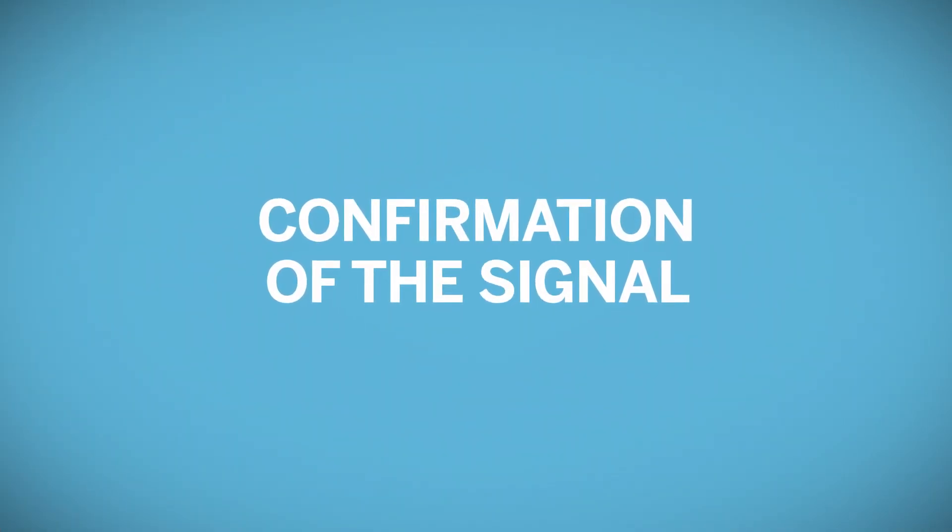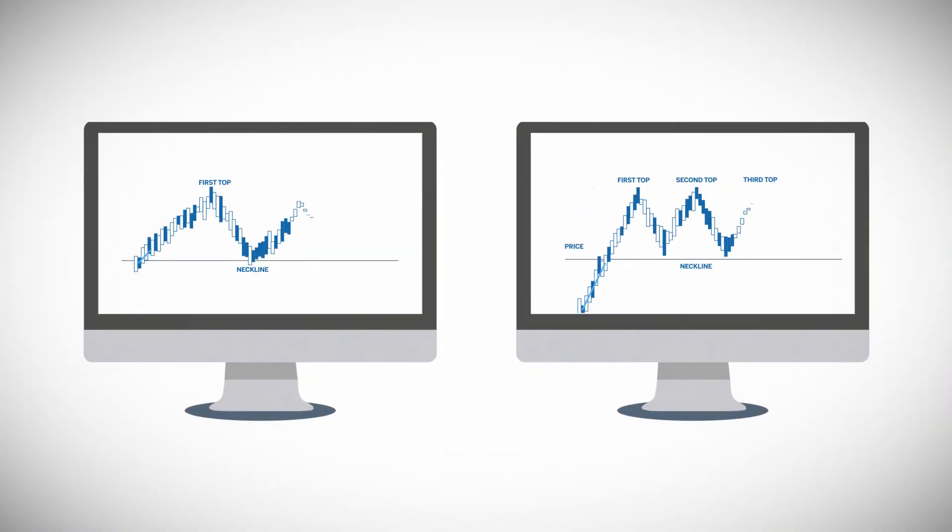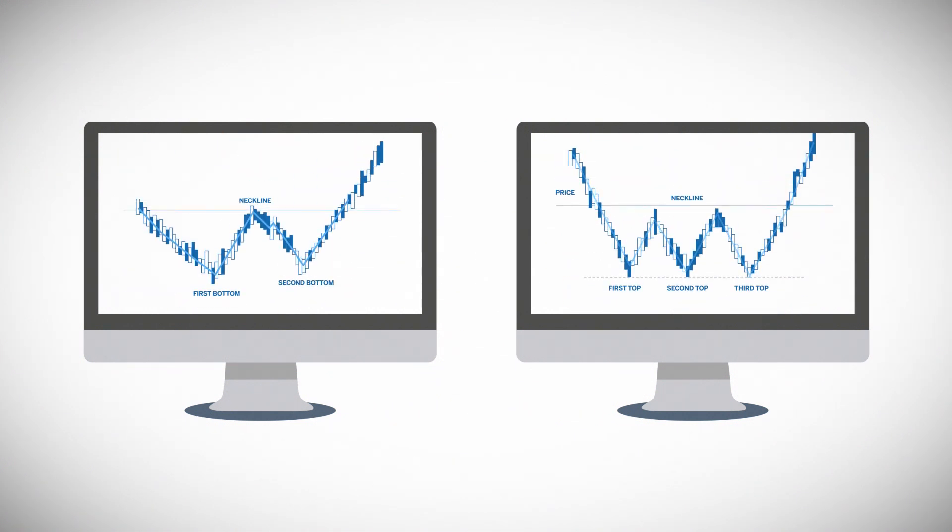Like any technical analysis pattern, confirmation is needed on the signal. Typically, on double and triple tops, the confirmation signal is breaking below the low formed between the highs. For double or triple bottoms, the confirmation signal is breaking above the high made between the lows.